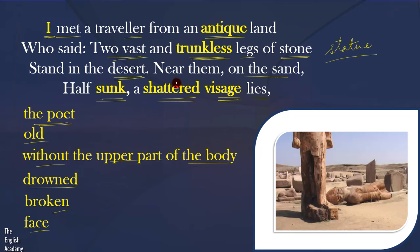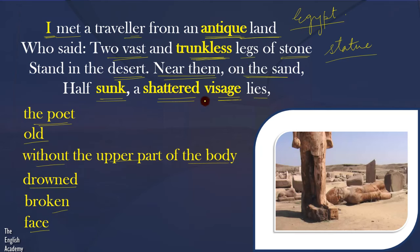Near these two legs, on the sand, half sunk a shattered visage lies — so nearby there was a broken face of the same statue lying in the desert. This antique land is Egypt. The traveller told the poet that in Egypt, in the desert, he saw the remains of a statue: two legs standing without the upper body, and nearby the broken face of the statue, partially buried in the sand.